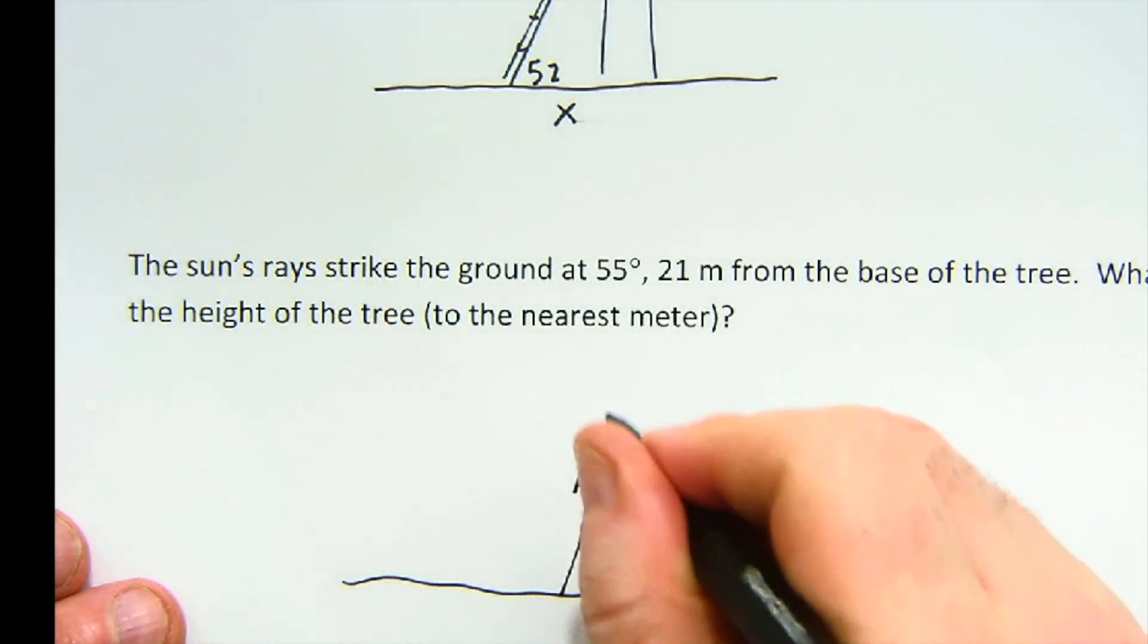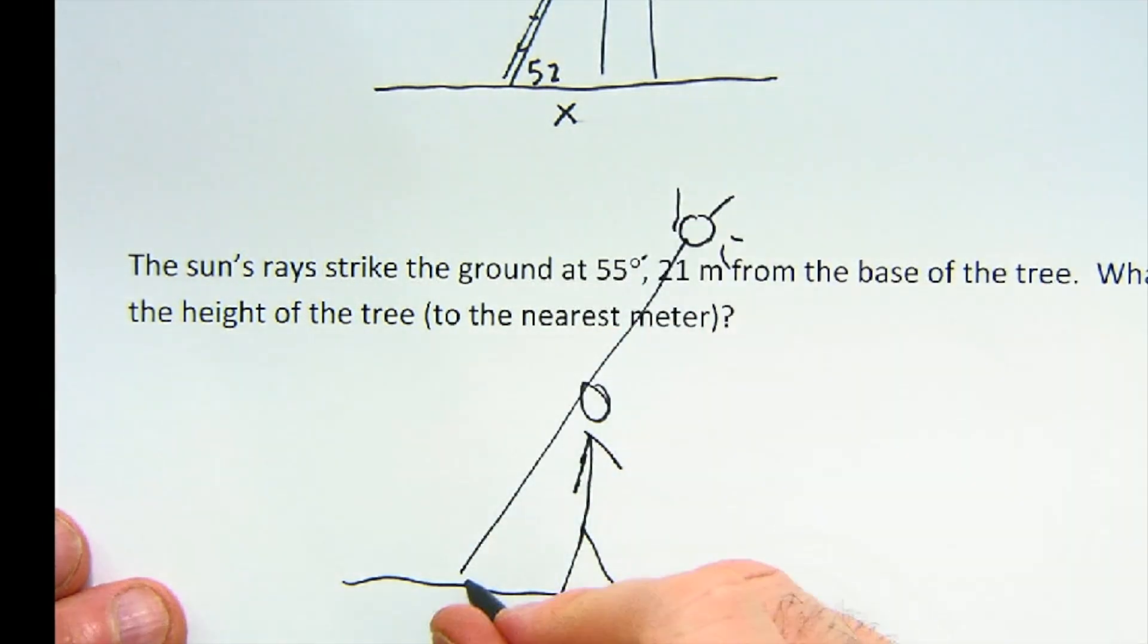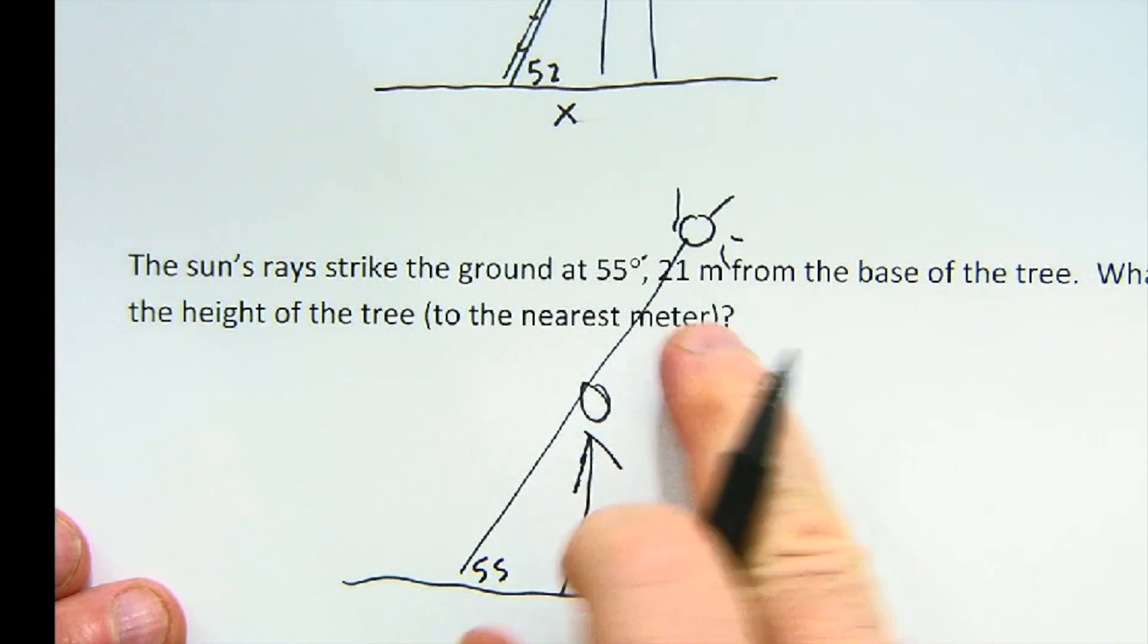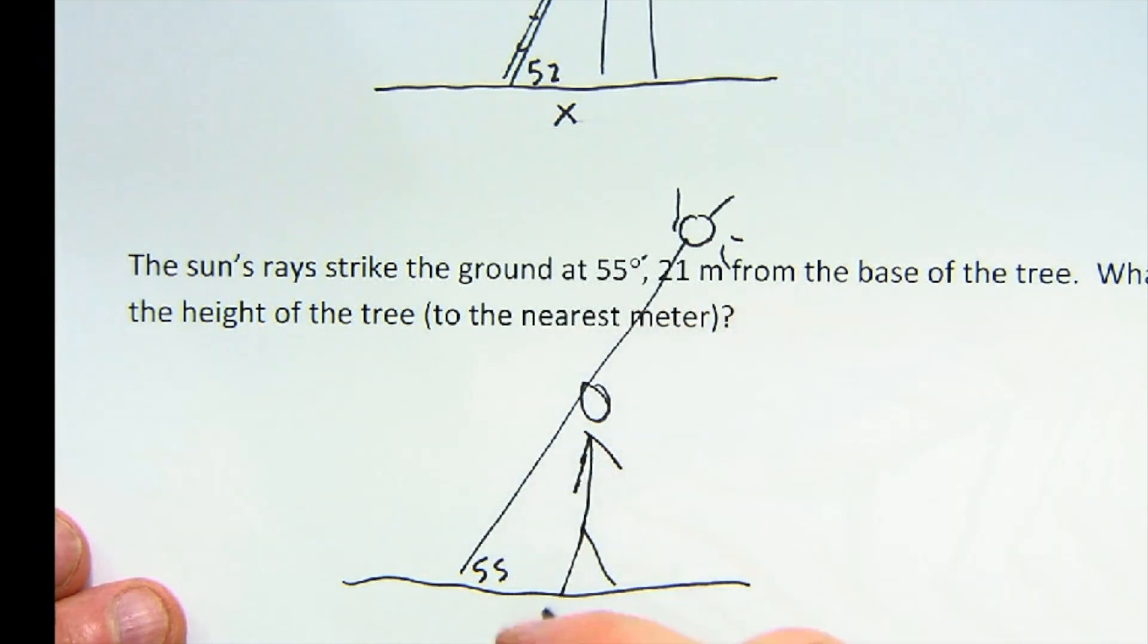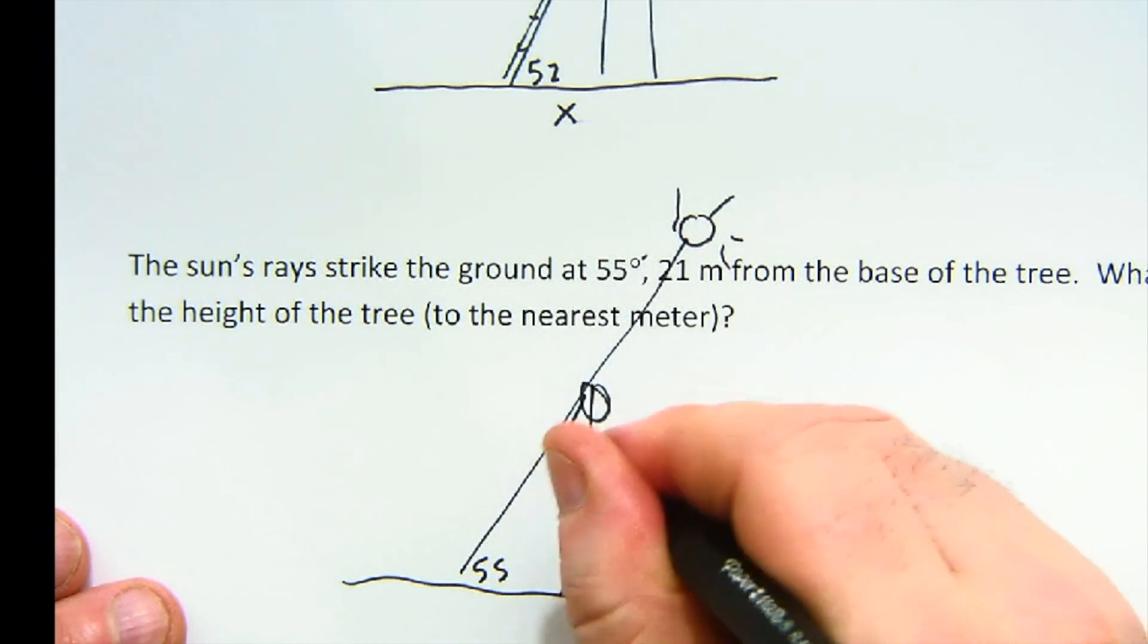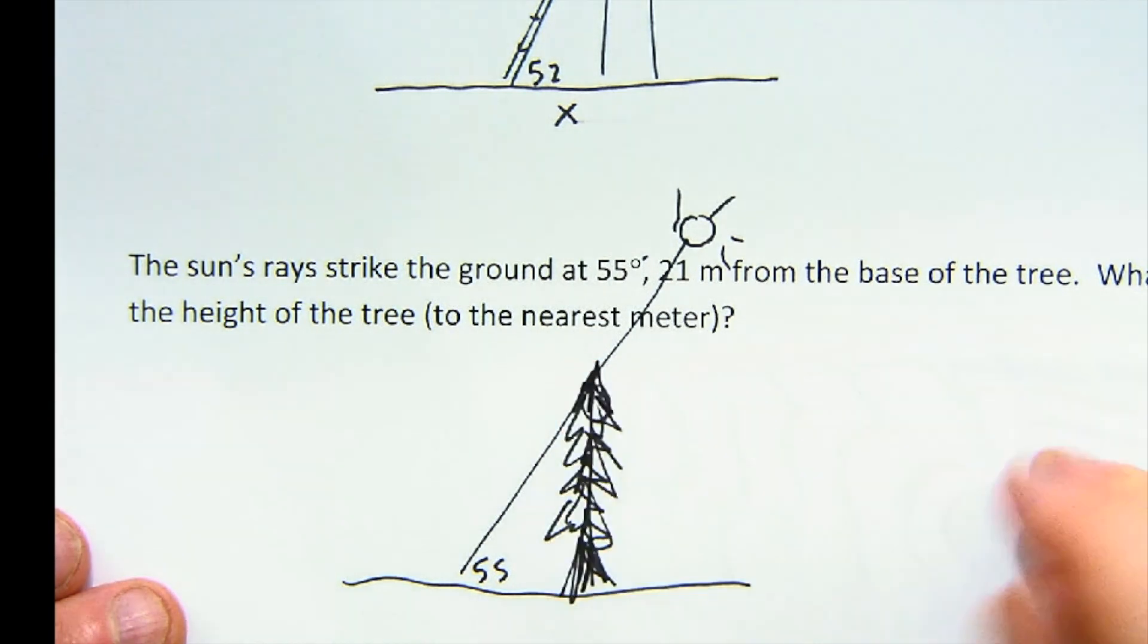Sun's rays strike the ground at 55 degrees. Here's our person, the sun beating down on us. Strikes at 55. 21 meters from the base of the tree. Oh, this wasn't a person. It's a beautiful tree. Let's do a quick conversion here to our tree. There's our tree.